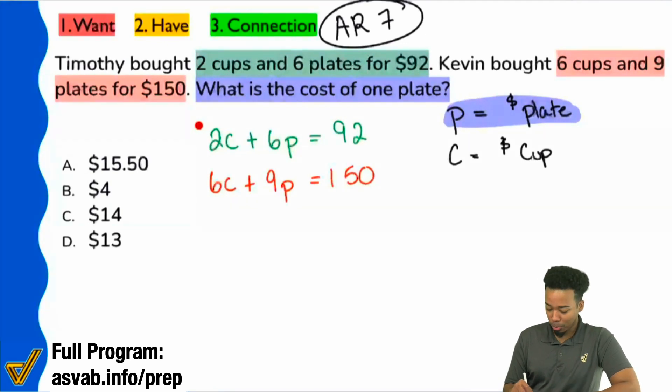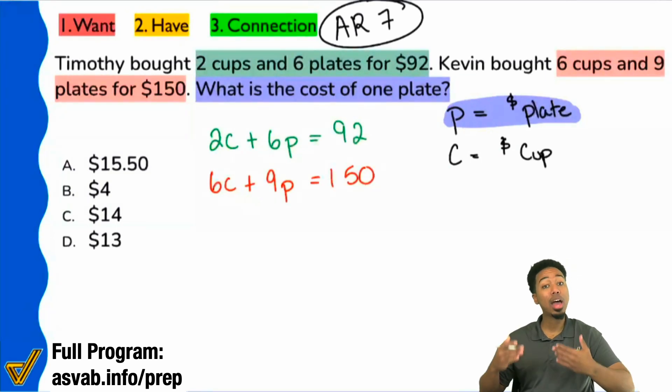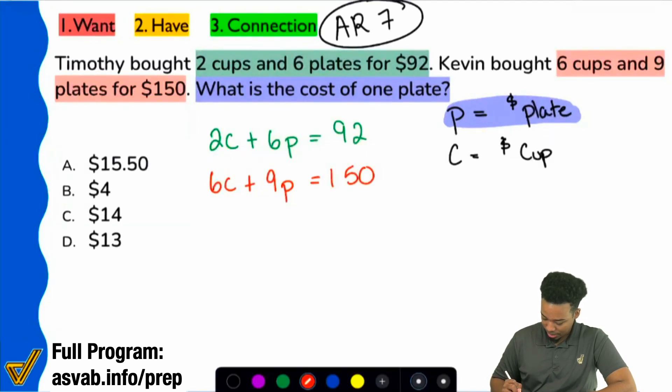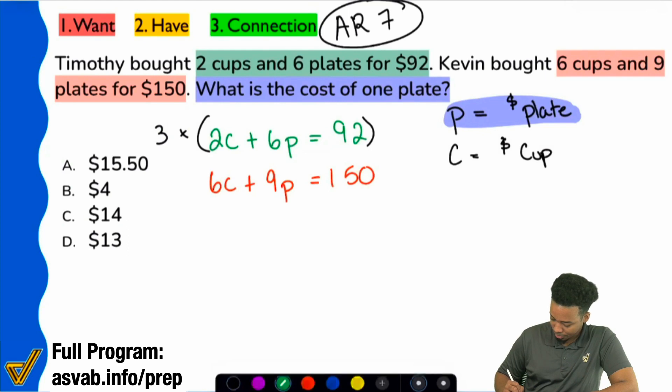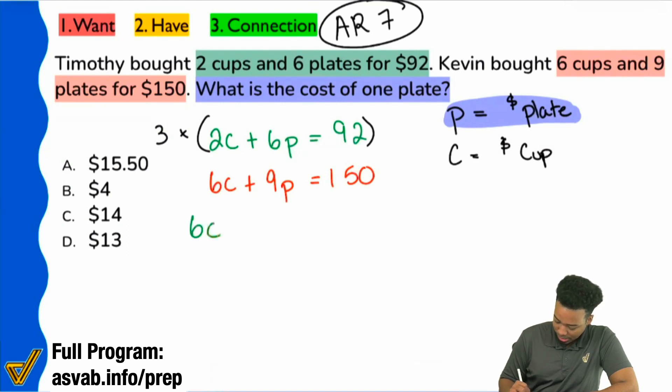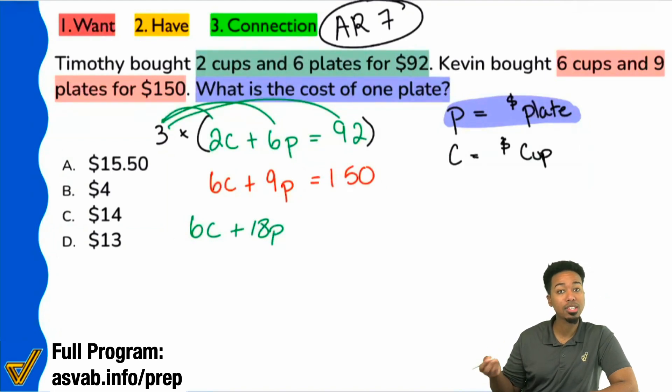So once I do that, I'm going to go ahead and say again, this entire top equation, multiply the whole thing by three. So once I do that, we're actually going to end up having over here, that's going to be 6C, that'll be 18P, and then 92 times three is 276. 90 times three is 270, two times three is six. So that's going to be 276.